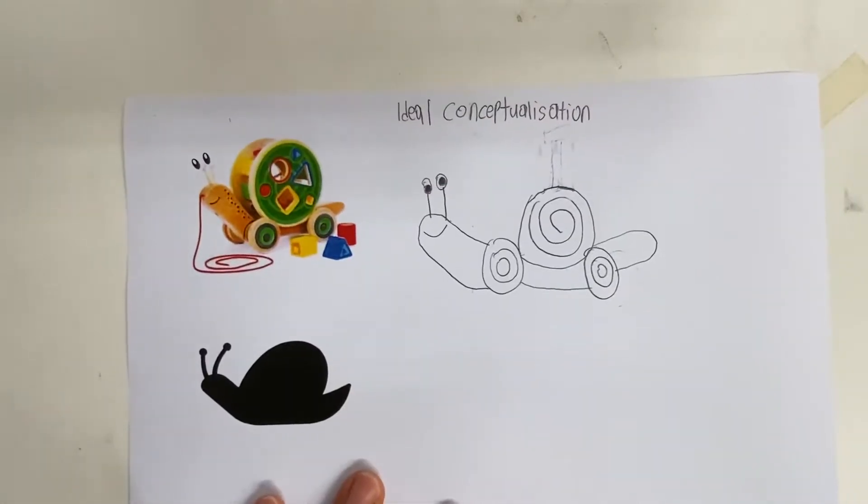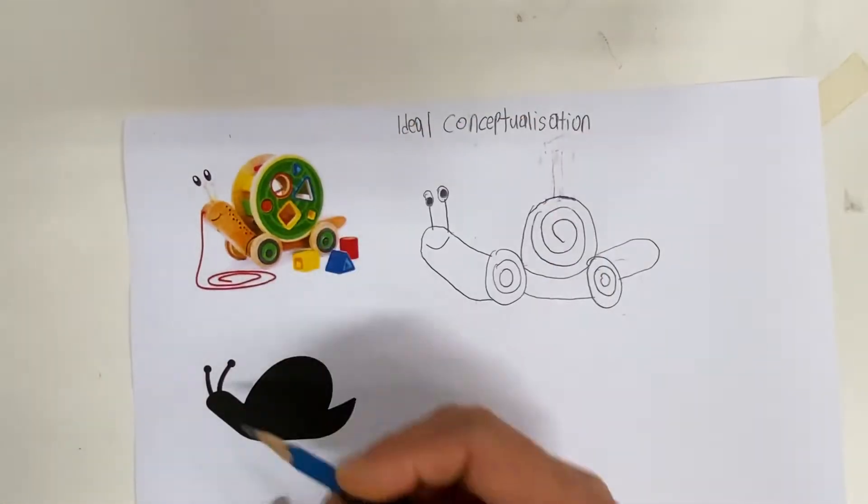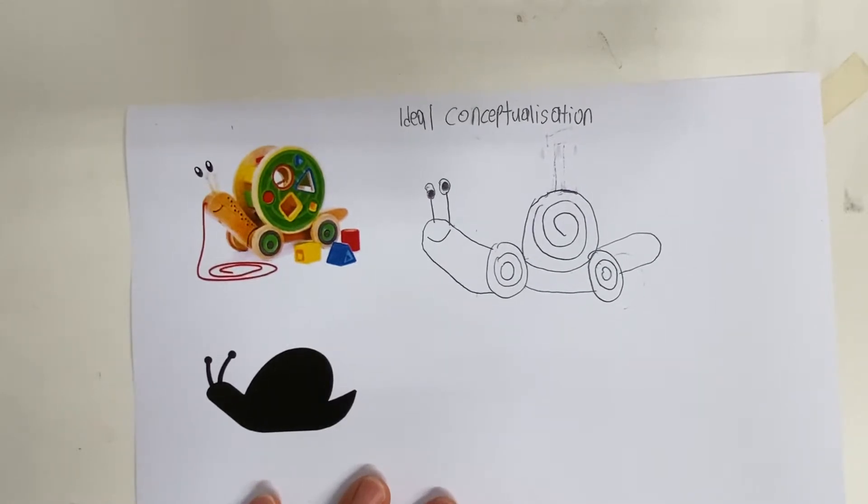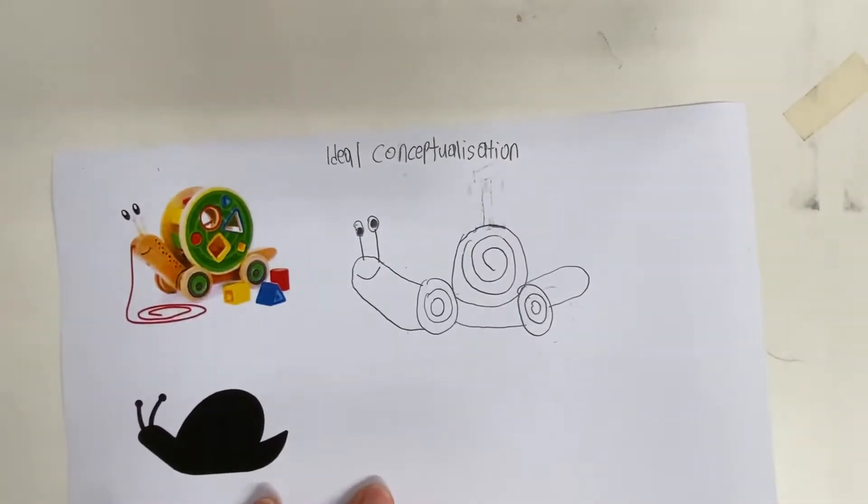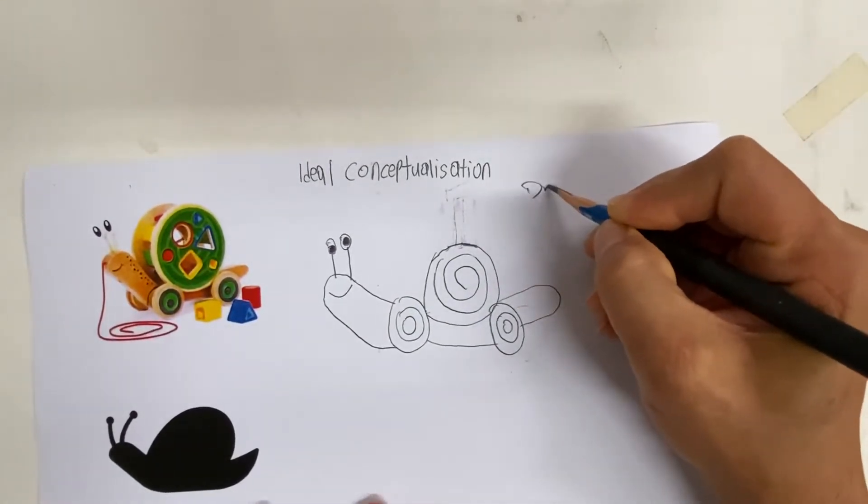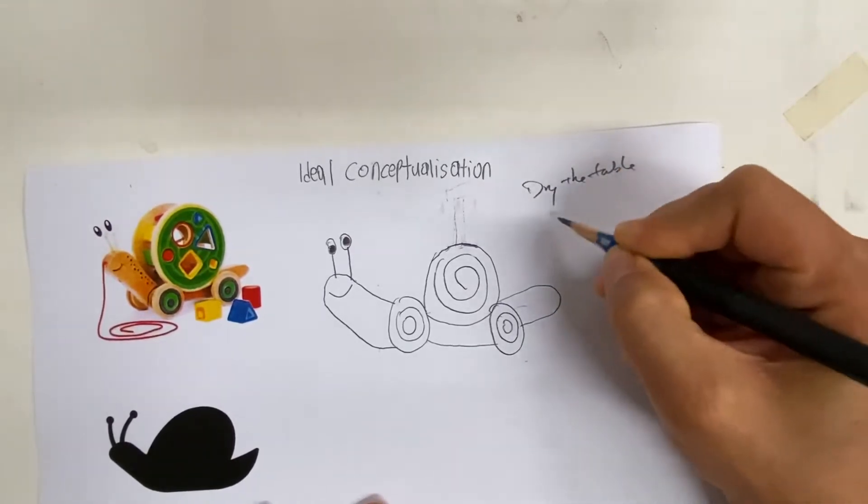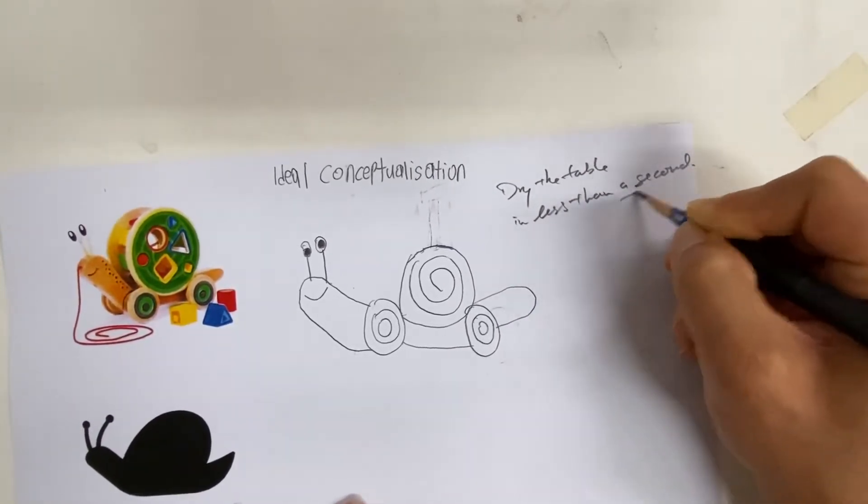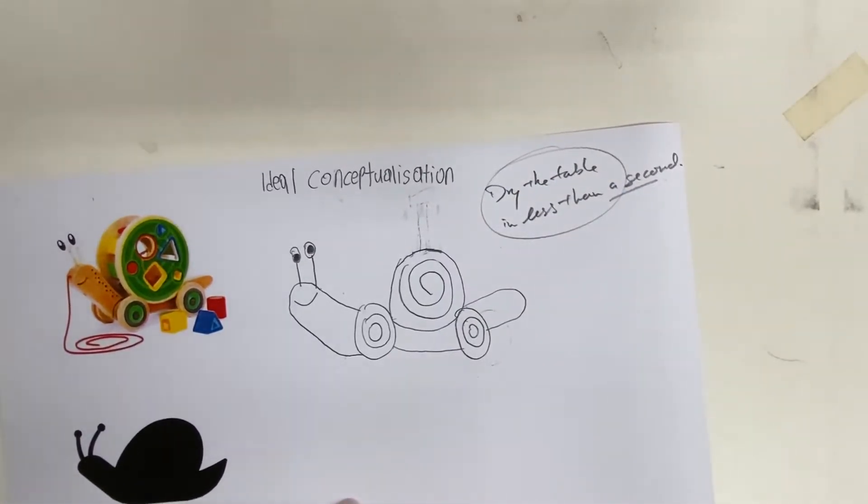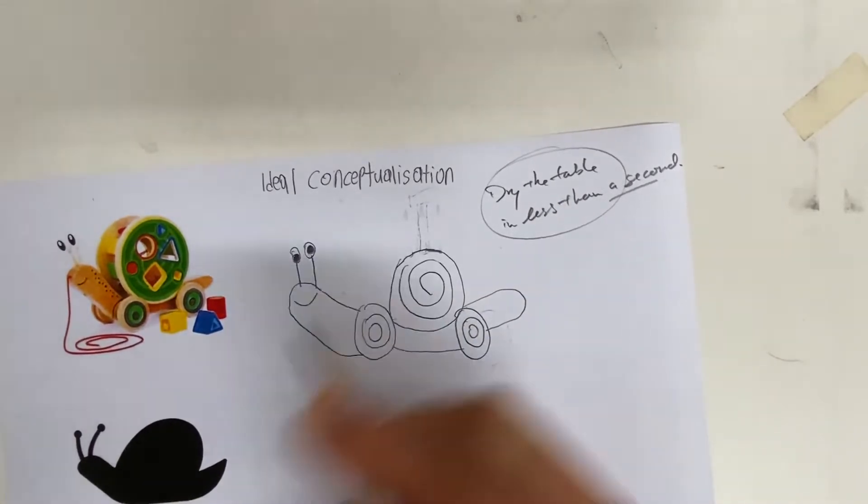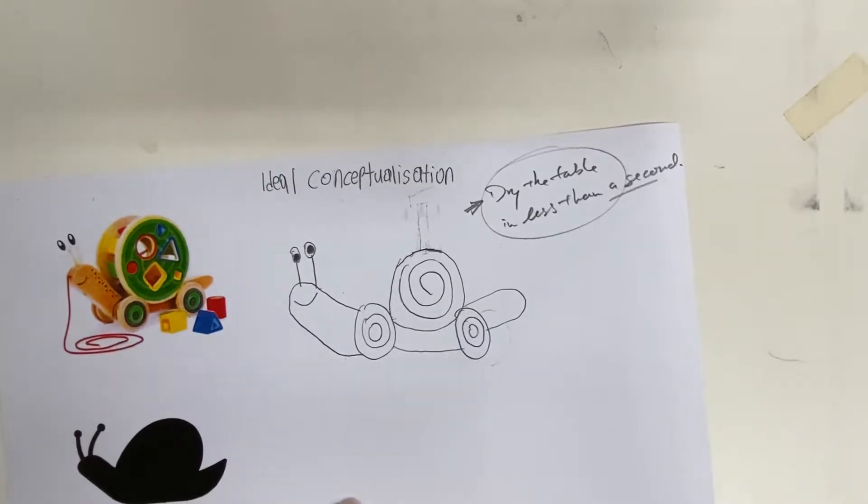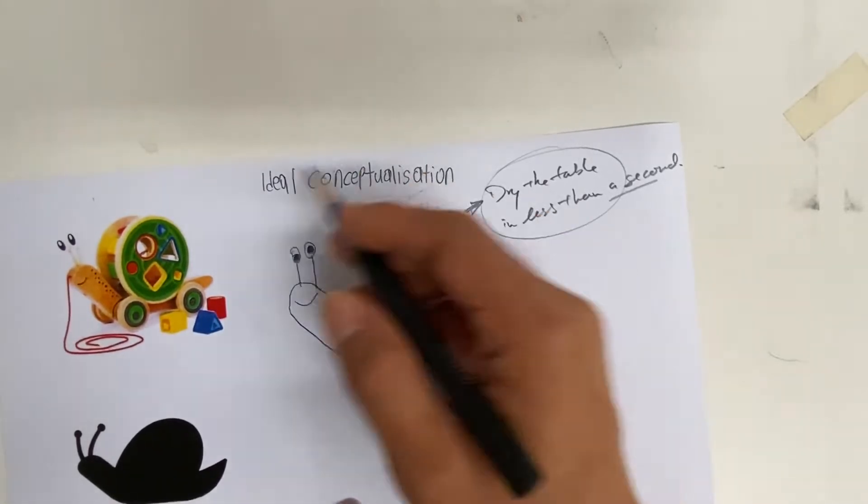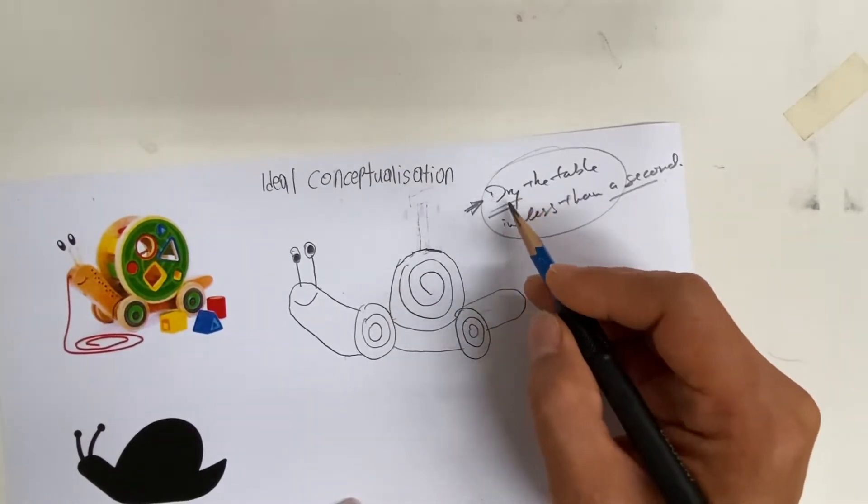And the problem with starting in this manner is, when you look at this page, there's no indication what the direction of the design should be. So what I would suggest is to first write what exactly you want to do. For example, dry the table in less than a second. Where do I get this sentence from? Before you do idea generation, you would have already a list of established design specifications. They will be drafts, but at least they should be there to guide you in your idea generation.